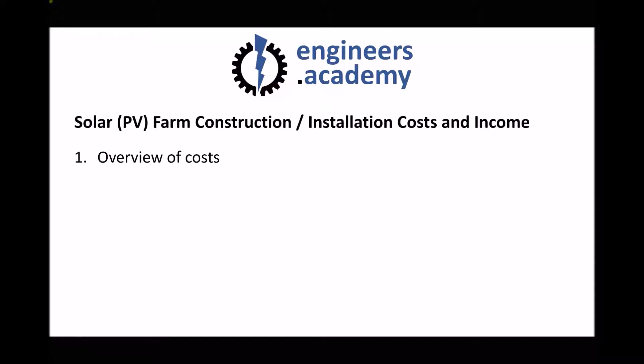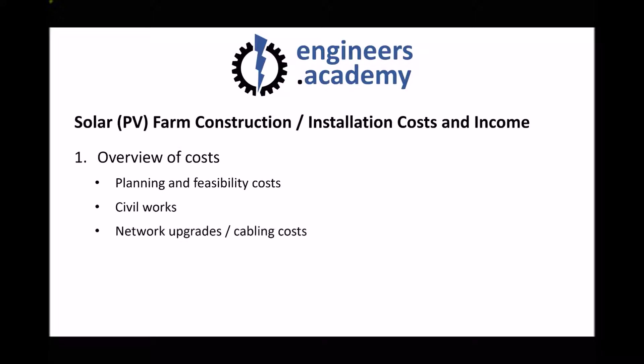As with our wind farm there are a number of different costs associated with constructing our solar farm. We still have planning and feasibility costs, civil works costs to get components to site, and network upgrade and cabling costs because our solar farm needs to be connected to the grid. We also have the cost of the solar panels themselves, which account for roughly 35% of the overall cost. The big difference with solar farms is that solar panels produce DC current and we need AC current, so we have the additional costs of inverters, which account for around 10% of the overall project costs.